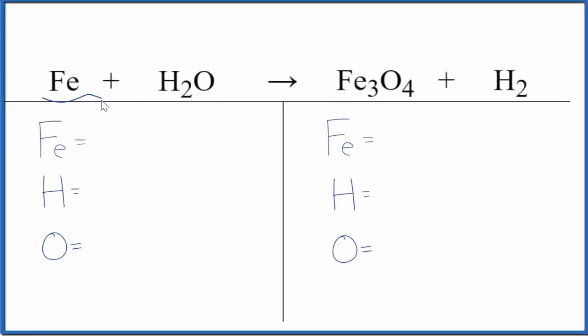Let's balance the equation for Fe plus H2O. This is iron plus water. We end up with Fe3O4 plus H2.